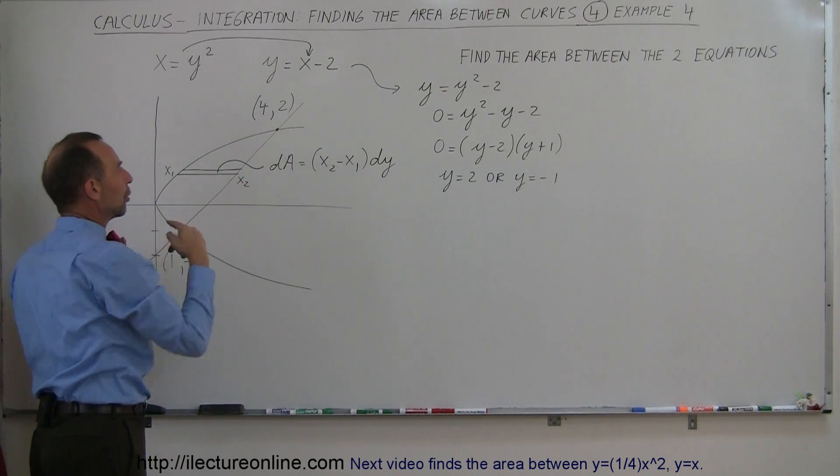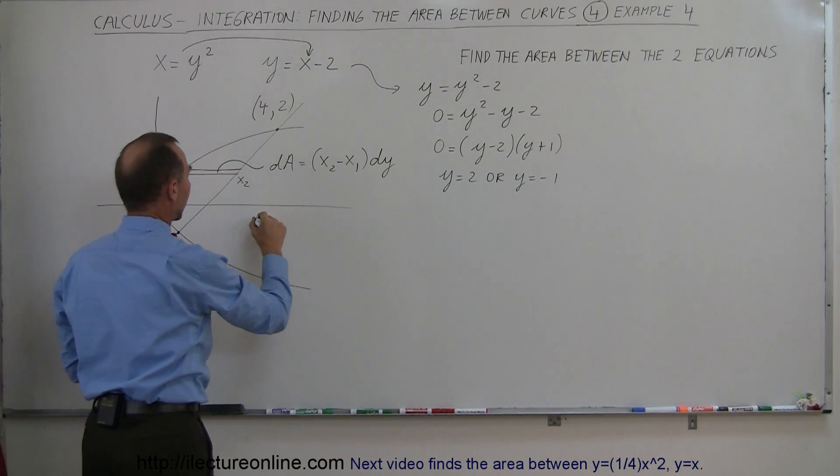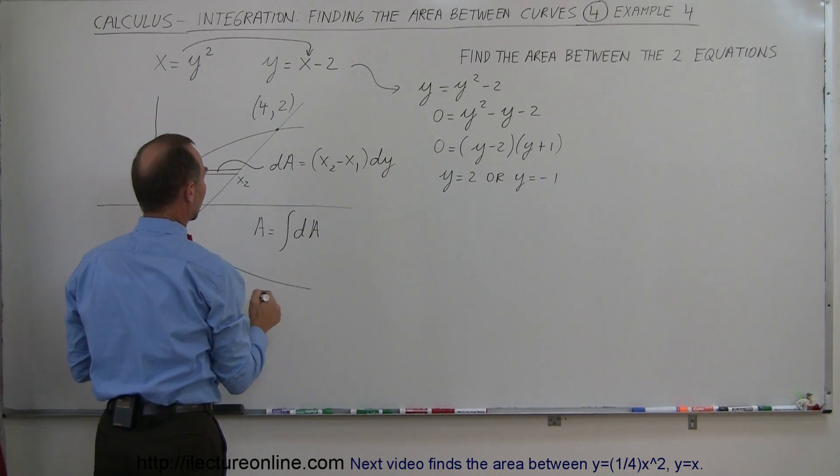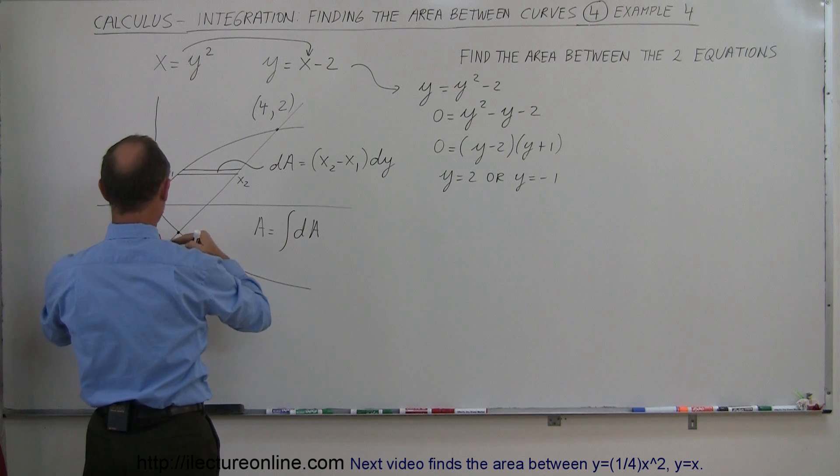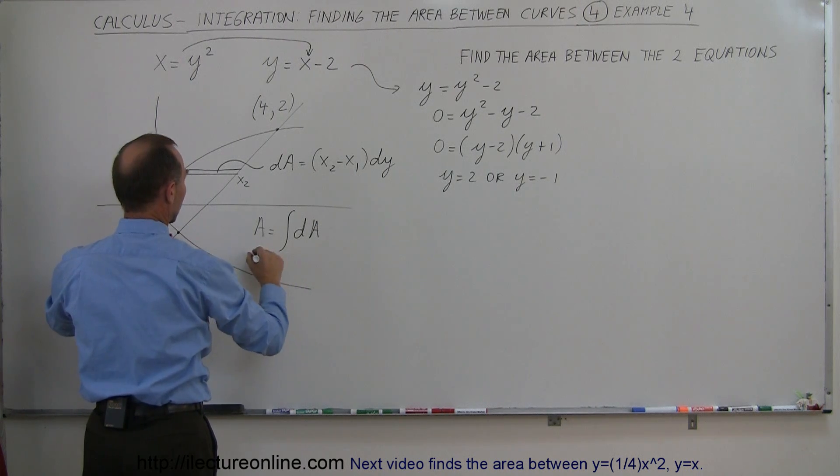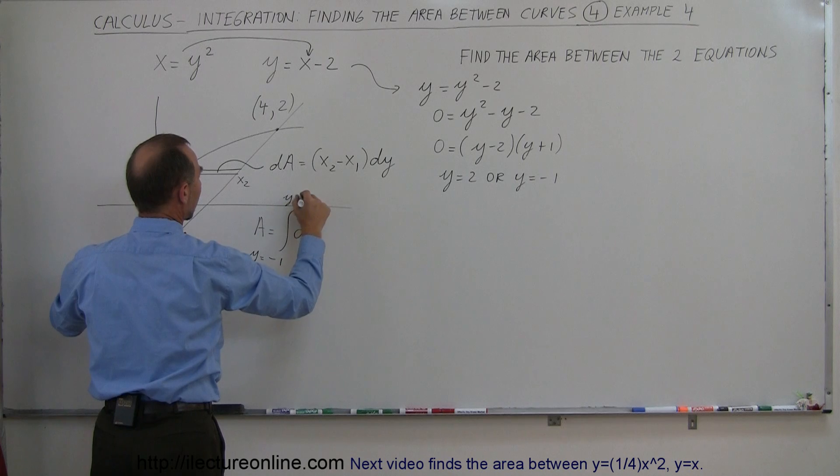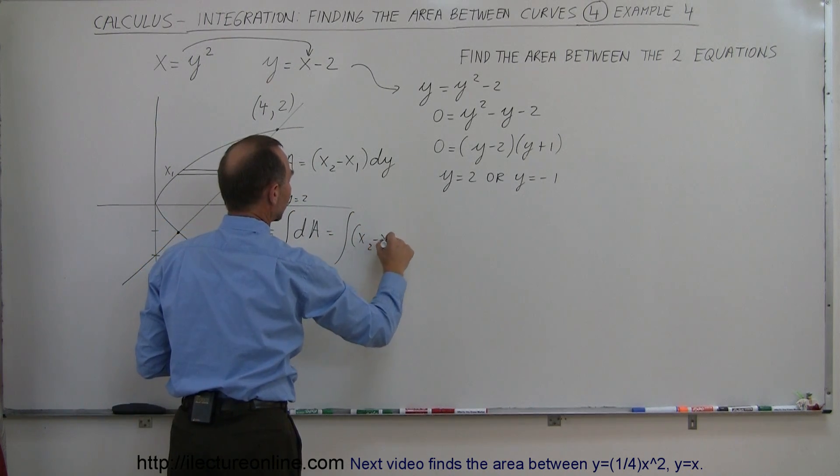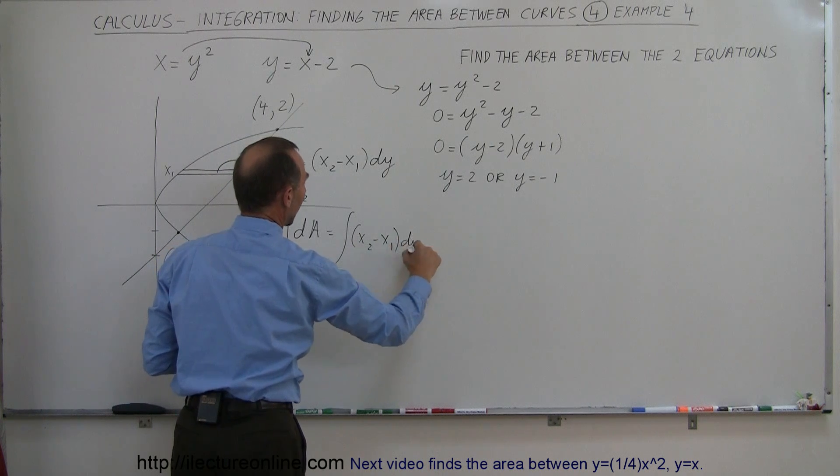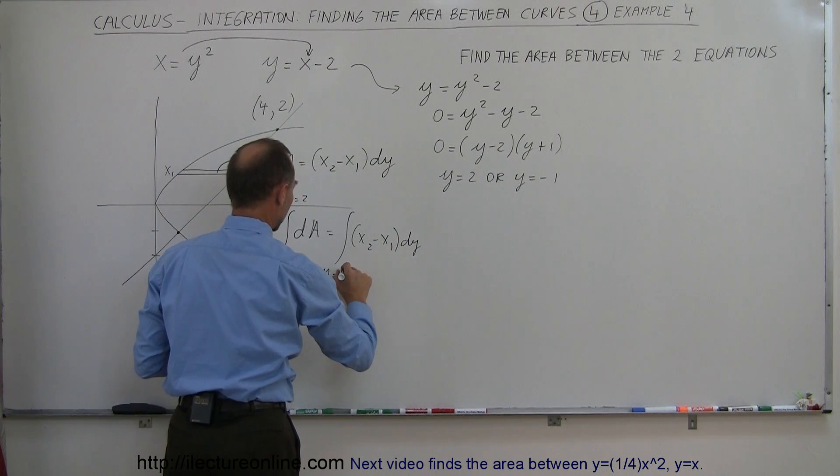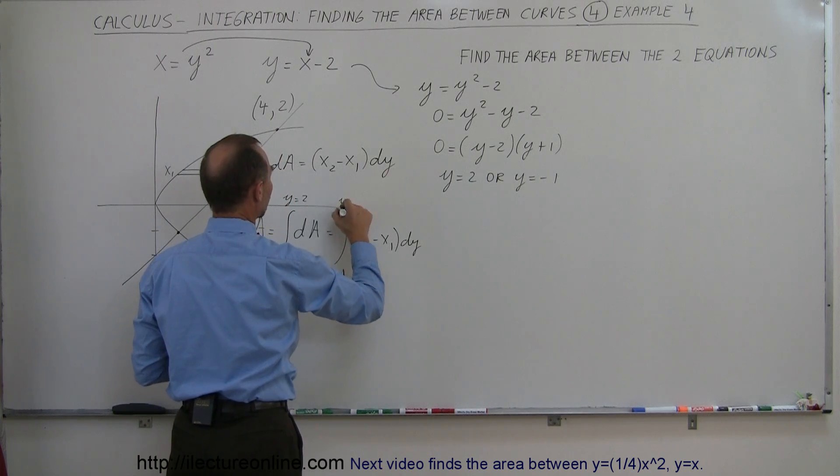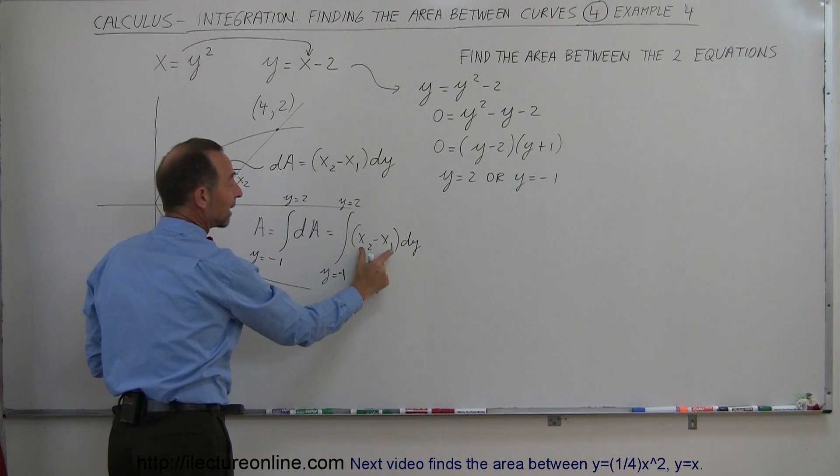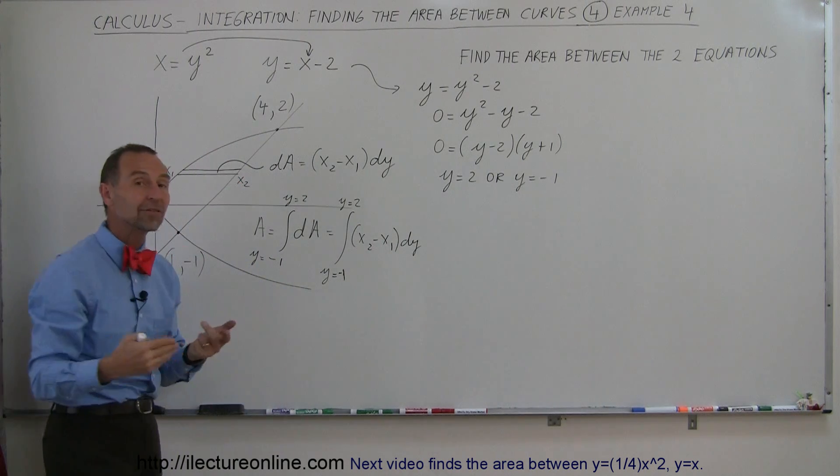Okay. Now that I have my limits, I can go ahead and try to integrate that. So my total area is going to be equal to the integral of all my d areas. And of course, I'm going to integrate from y equals negative 1 to y equals 2. And my dA is equal to the integral of my x2 minus x1 times dy from y equals negative 1 to y equals 2. Now of course, I'm going to integrate over y limits. I need to replace the x1 and x2 by their equivalents in terms of y.